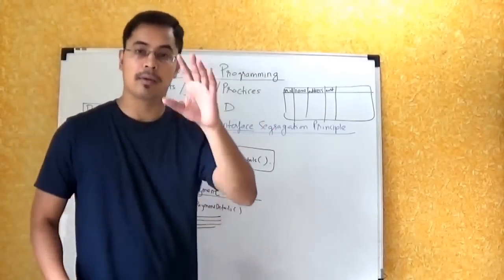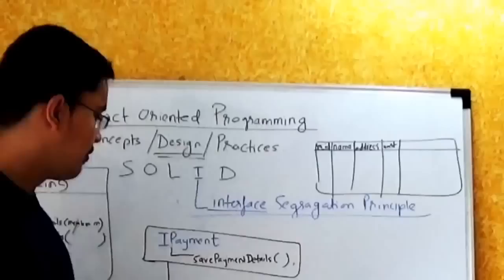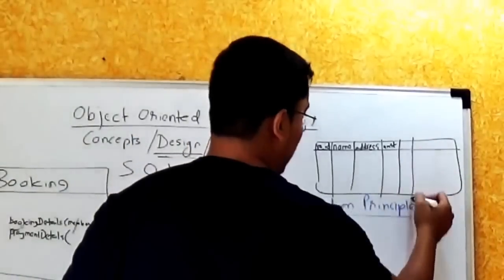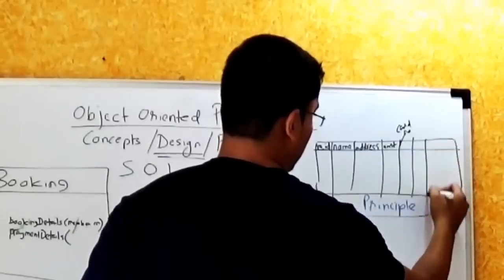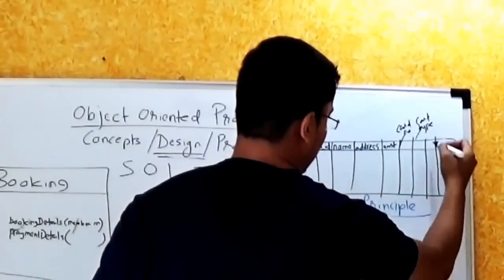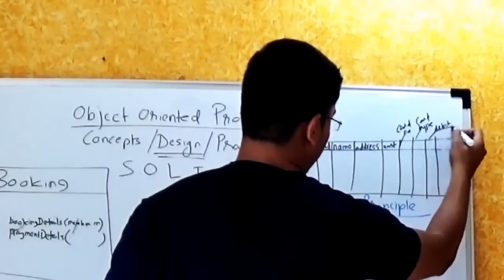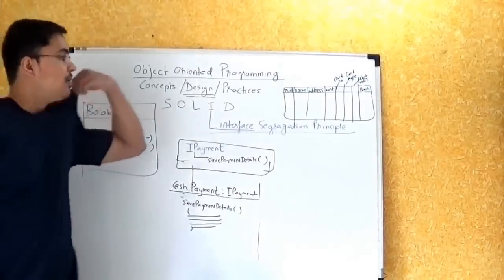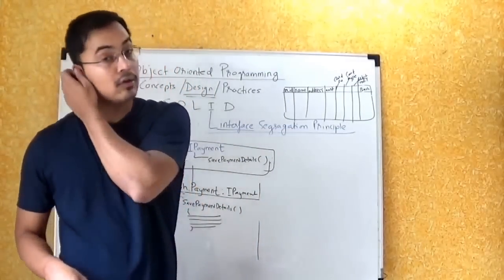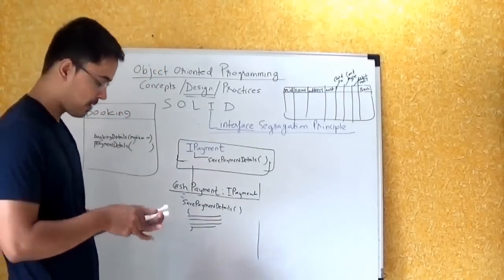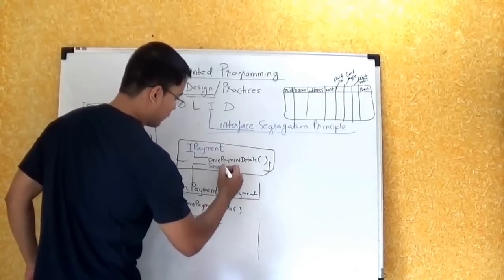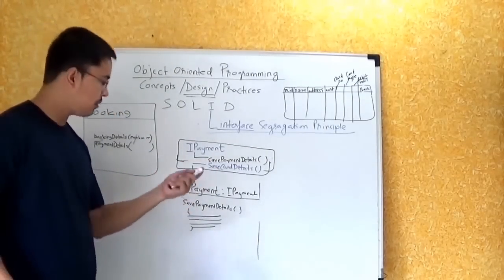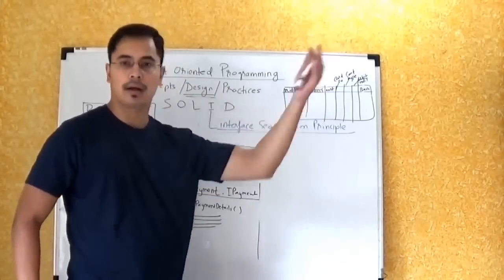After some time, the administration realized they must introduce Card Payment — both counter card payment and online card payment. With card payment we need additional information such as Card Number, Card Type (like Visa or MasterCard), Debit or Credit Card, and Bank Name. One way we could handle this is to add one more method to iPayment called SaveCardDetails, which stores these additional fields.